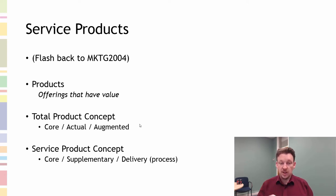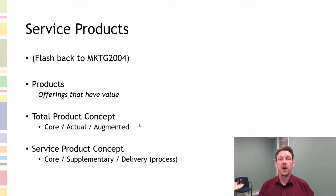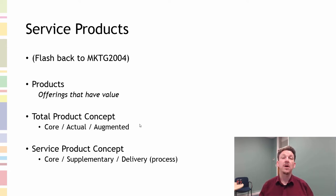In the service product concept, you have core, supplemental, and delivery — what it is the customer wants, what it is that we are providing as an actual product, the supplemental elements (which we are about to talk about via the services flower), and then the procedural and process elements of the service manifesting itself.